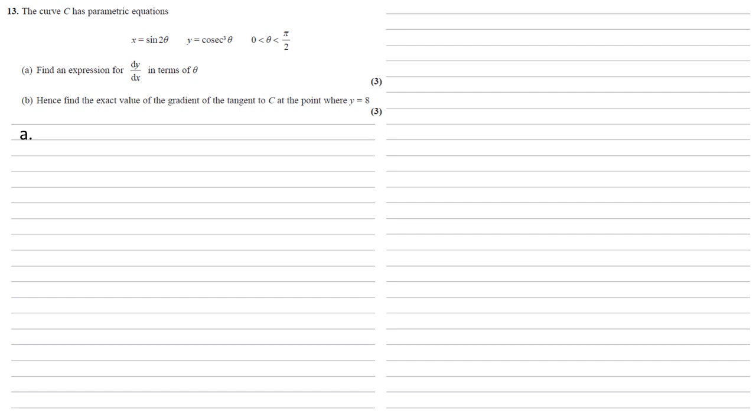For part A, we need to find an expression for dy by dx in terms of θ. In finding dy by dx for parametric equations, we need to first differentiate both x and y with respect to θ.